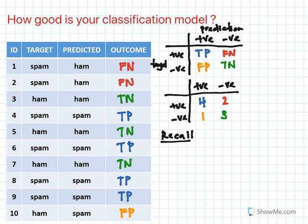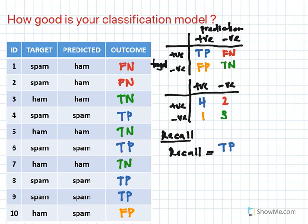The definition of recall is: out of all the positive classes, how many did you predict correctly? It should be as high as possible. Recall equals your true positive divided by something — let's work through it.